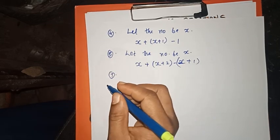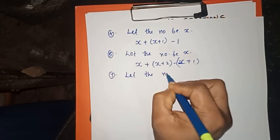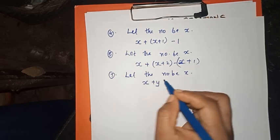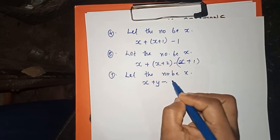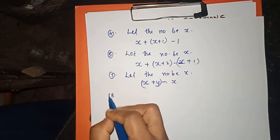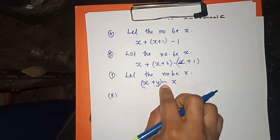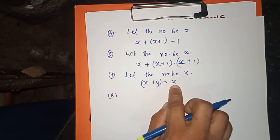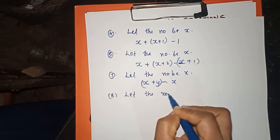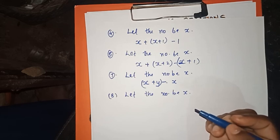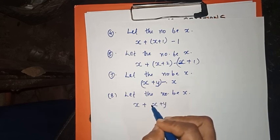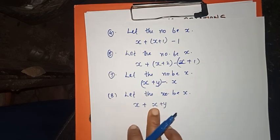To a number x, add another number y, then subtract the first number x. So x plus y minus x gives y. Add another number and then add the sum to the first number x: the result is x plus (x plus y), which equals 2x plus y.